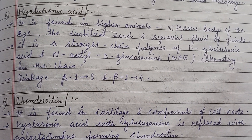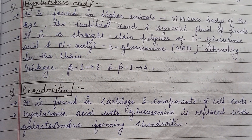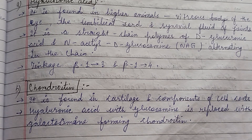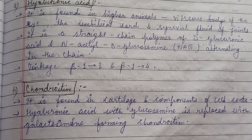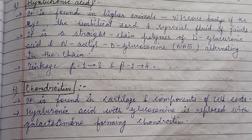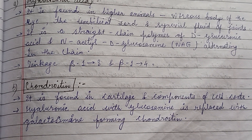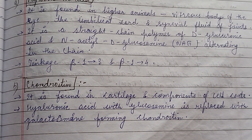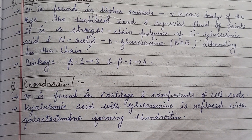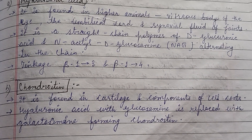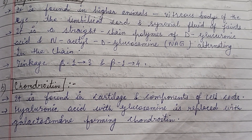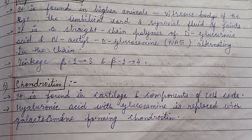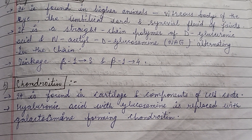Hyaluronic acid is found in the vitreous body of the eye, the umbilical cord, and the synovial fluid of joints. Its linkages are beta 1-3 and beta 1-4.